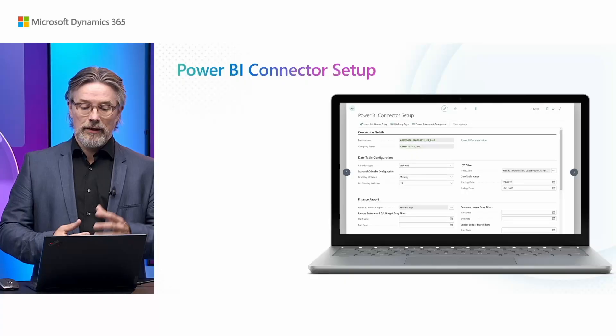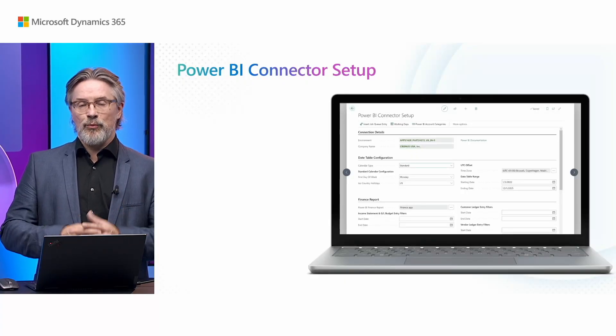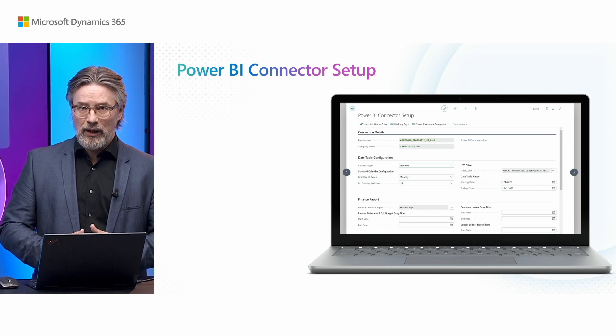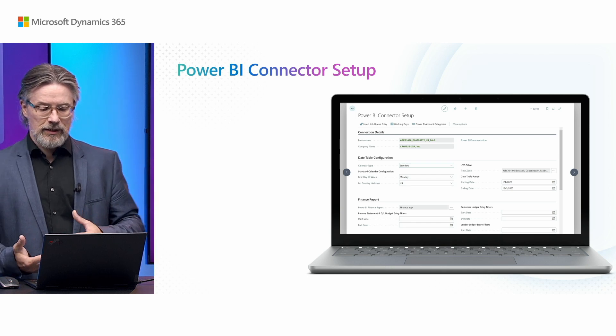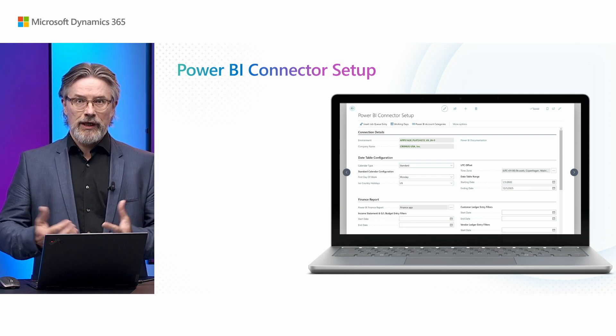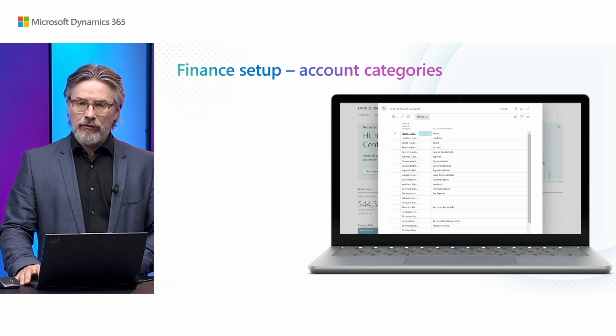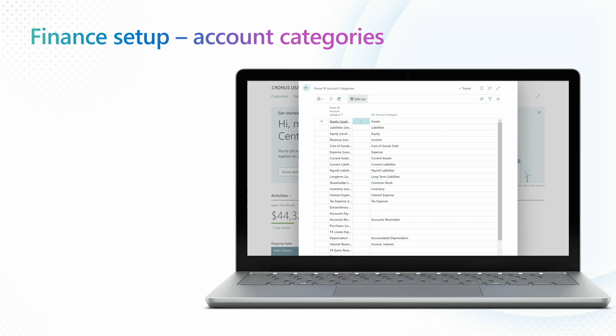There's a piece of setup that you need to do. You need to pick the right apps for the right set of reports, and you do that from within BC. For the finance report, there is some setup for account categories so you get all of your financial KPIs, but it's straightforward and there's even a wizard to take you through it the first time. There are some defaults, but if you're running your own chart of accounts or have added your own account categories, you might want to modify this.